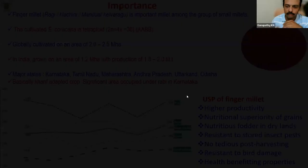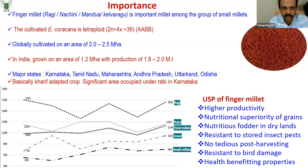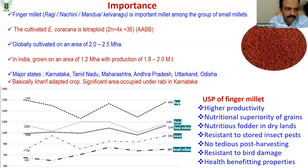I'll be explaining first finger millet and then little millet. Finger millet, as you all know, is one of the major millets next to pearl millet and sorghum. It is known by different names — mostly called Raghi in southern India, Nachni or Mandua in the north, Kelvarago in Tamil Nadu, and Mandia in Odisha. Scientifically it is a tetraploid species with A and B genomes, 2N=4X=36.